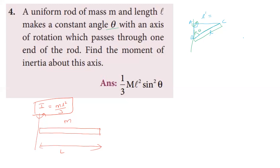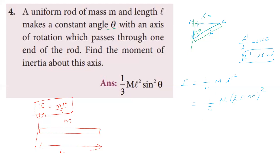The opposite side divided by the hypotenuse equals sin theta, so l' = l sin theta. The perpendicular distance from the axis of rotation is l' = l sin theta. Therefore, the moment of inertia of the rod making angle theta with the axis is (1/3)ml² sin²theta.